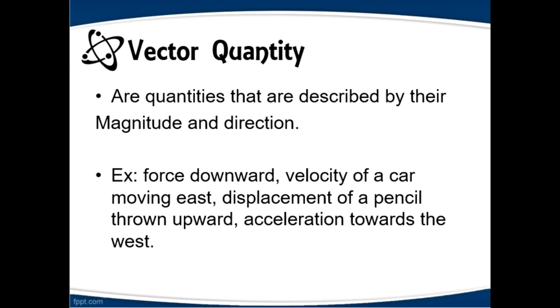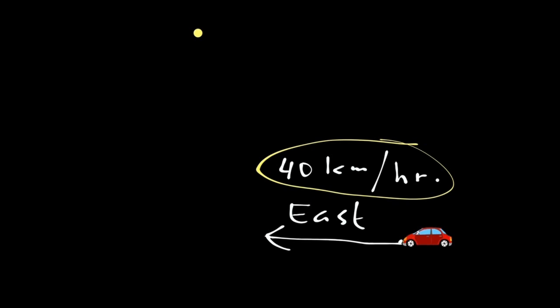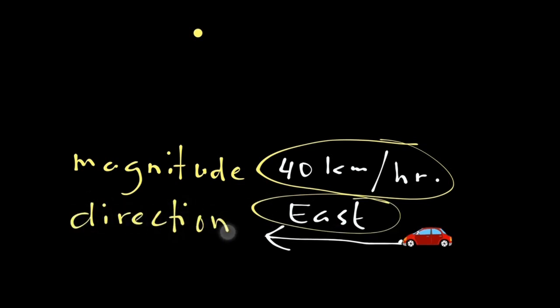Example of this is when you drive a car from one point to another going in a particular direction. Let's say the car is moving 40 km per hour going east. The magnitude is 40 km per hour pertaining to speed and the direction obviously is east.